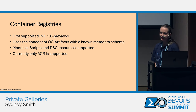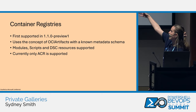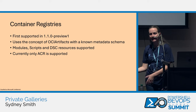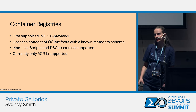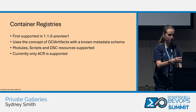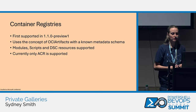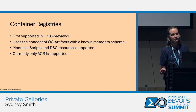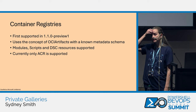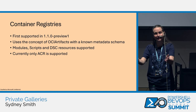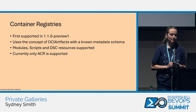What's next for PSResourceGet? In 1.1 preview 1, we've released the concept of container registries as private galleries. One thing I really want to drive home is that these are not containers — they're modules in container registries. We took this concept of an OCI artifact with a known metadata schema and abstracted it so that we could use it with nupkgs. Nupkgs are just zip files essentially. We applied this idea to modules, scripts, and DSC resources. This should feel like any other repository — you shouldn't feel like you're using a container registry.